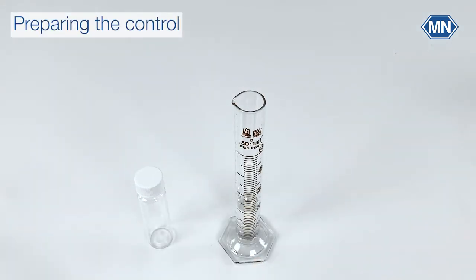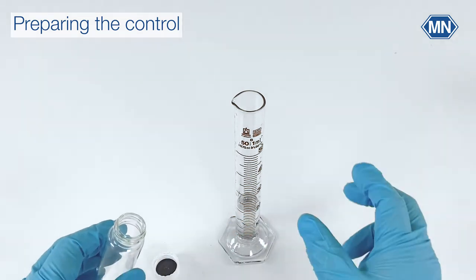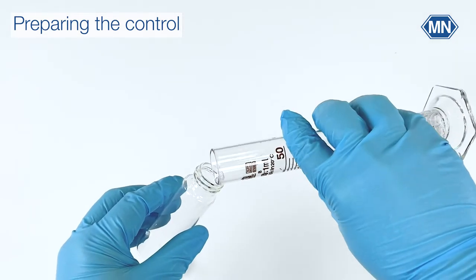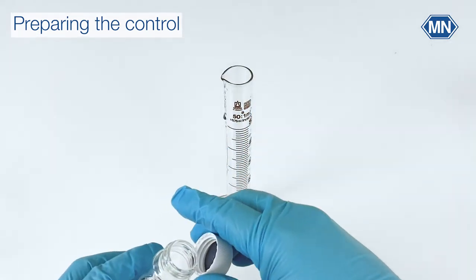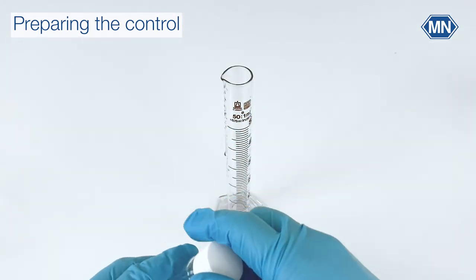In the first step you have to prepare your blank. Measure 20 ml of your diluting water and fill it in a reaction vessel. Shake it strongly for 30 seconds to enrich it with oxygen.